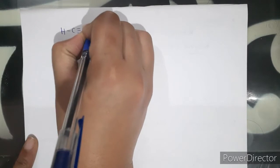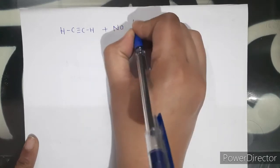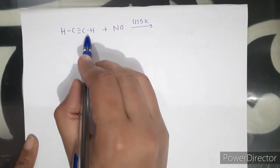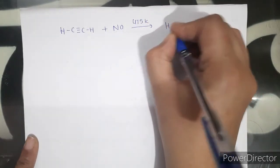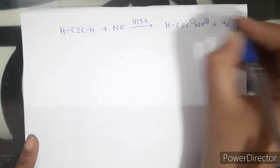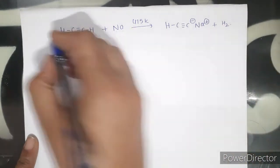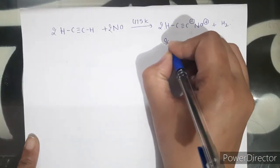The acidic nature of alkynes is demonstrated by reactions with sodium metal, sodamide, and Tollen's reagent. When we react with reactive metals, for example when ethyne reacts with sodium at 475 K, sodium is more reactive than hydrogen, so hydrogen is replaced by sodium, and a molecule of sodium ethynide is formed.